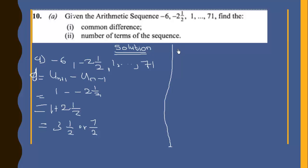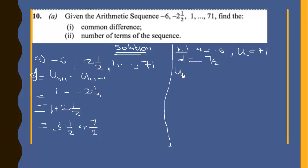Now we need to find the number of terms in the sequence. We know our first term is negative six, our last term is 71, and our common difference is seven over two. We use the relation u_n = a + (n − 1)d, so we have 71 = negative six + (n − 1) × 7/2.